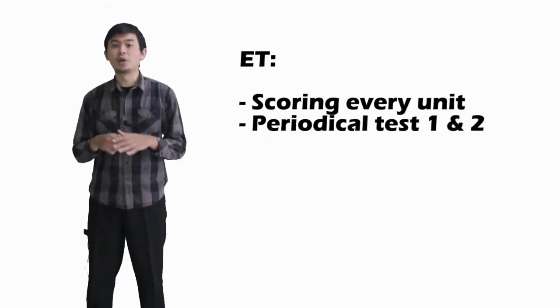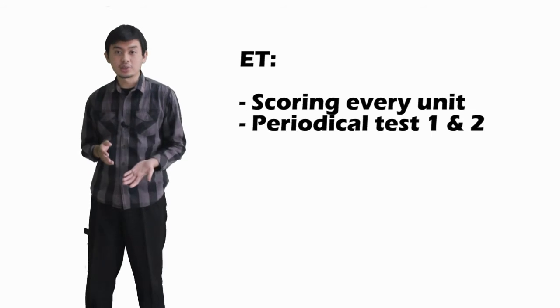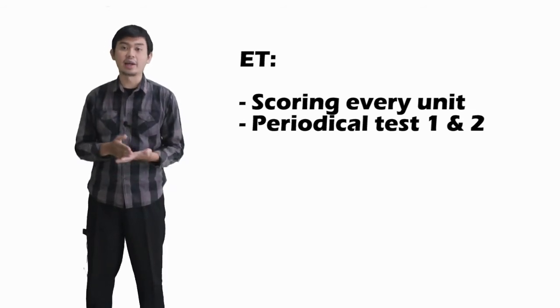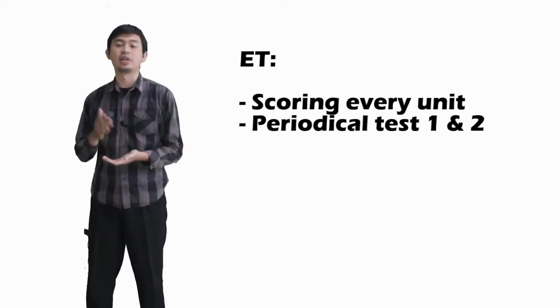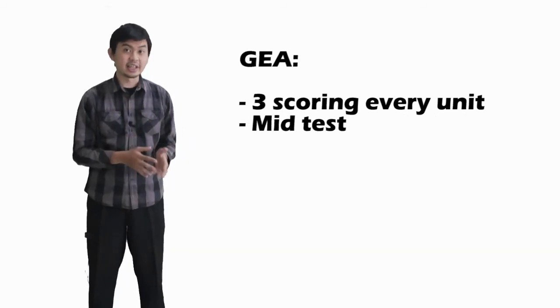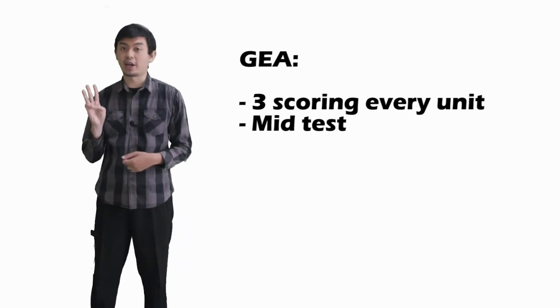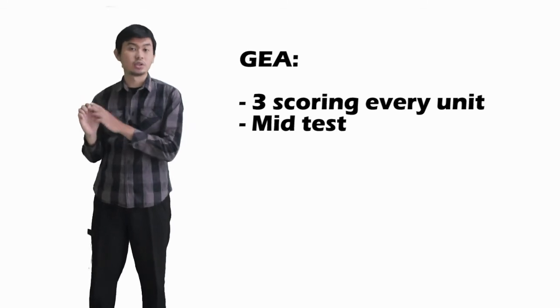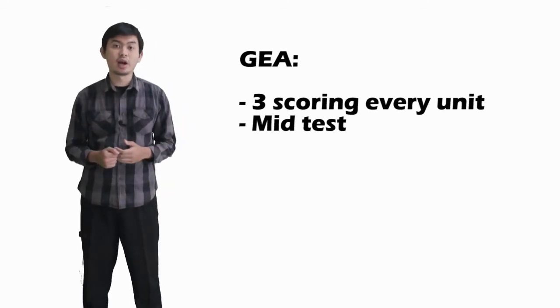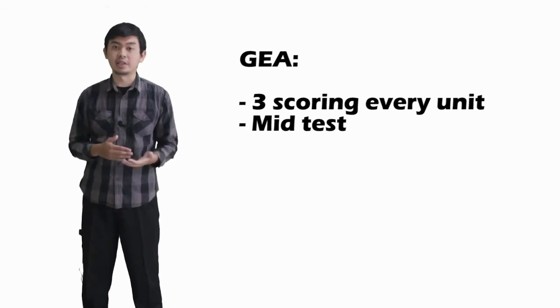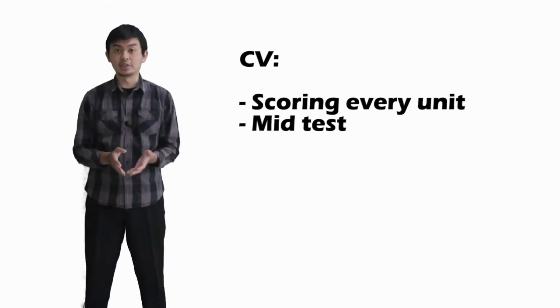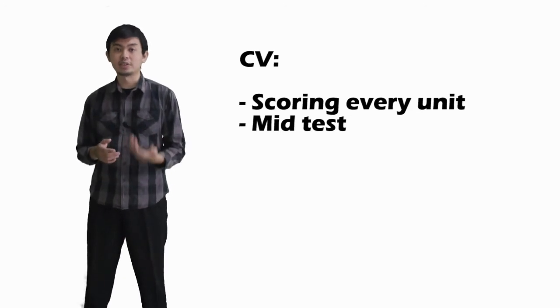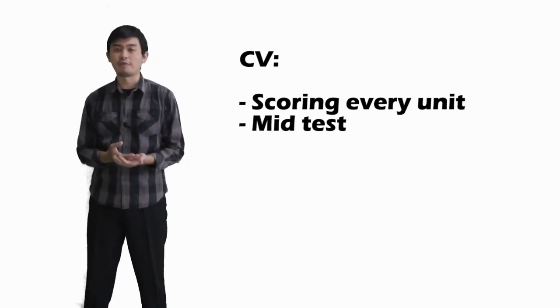For ET students, your progress will be scored in every unit. You will also have theoretical test 1 and 2 after finishing unit 5 and unit 10. For GEA students, you will have 3 scoring for every unit: speaking scoring, writing scoring, and project or CLIL scoring. You will also have mid-test after completing the second chapter. For CV students, your progress will be scored after finishing every unit and you will also have mid-test.